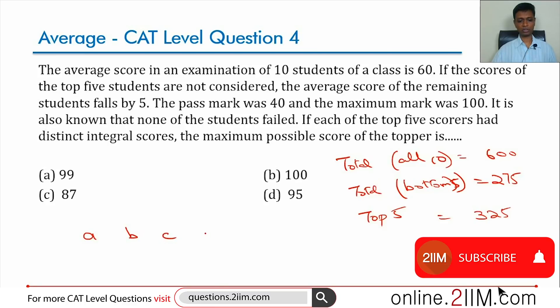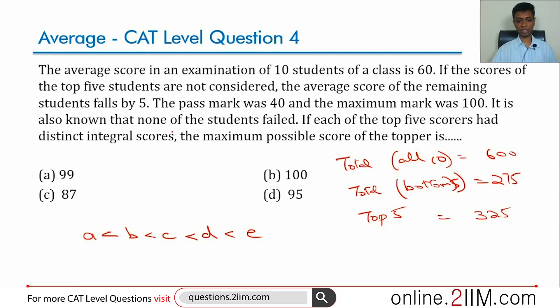Let's say the top five are a, b, c, d, e with a less than b less than c less than d less than e. So they have been told that they are distinct integral scores and we want to now find maximum value of e. E should be as high as possible. If e has to be maximum, I now know that a plus b plus c plus d plus e, all five put together, is 325.